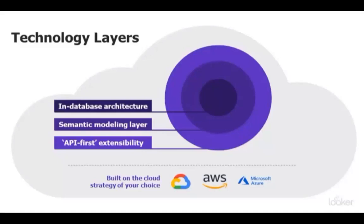A modern approach to data and analytics requires a modern technology foundation. Looker was designed to take advantage of evolving trends in data infrastructure. The technology powering Looker is based on three main pillars shown as three concentric circles. Our in-database architecture leverages the power of modern cloud MPP databases that are significantly more powerful, far faster, and much cheaper than their predecessors. This live connection to the database provides a complete view of your data without having to move any of it into the application layer.